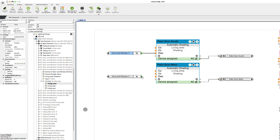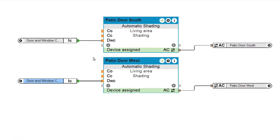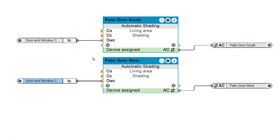What's very important now is that the input signal is reversed. Because if a window is closed, the contact delivers a 1, and if the window is opened, it delivers a 0. The input DWC, however, needs the exact opposite behavior. But that's not a problem — just hover over the input with your mouse, and as soon as the small black dot appears next to the cursor, a single click with the left mouse button will do the trick. A small dot will appear at the input DWC, which means it's reversed and we are ready to go.